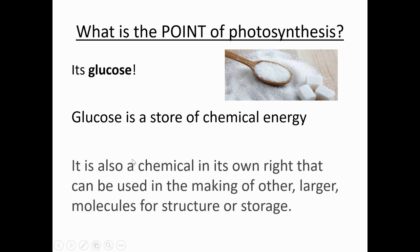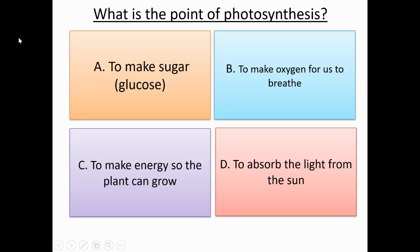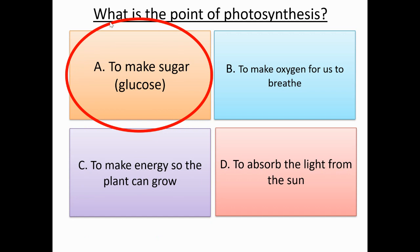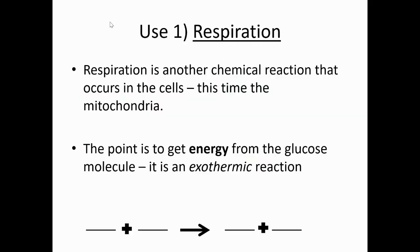Glucose is a store of chemical energy, but it is also a chemical in its own right. It can be used in making other larger molecules for structure or storage. This is the focus of today's lesson. Have a read of the boxes and decide which best answers: what is the point of photosynthesis? Pause the video. The answer is: to make sugar. The point of photosynthesis is to make glucose.